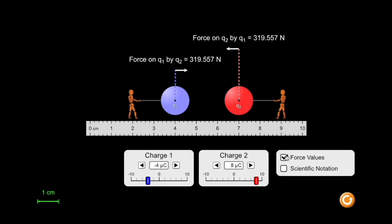Select and deselect the force values option to either show or hide the magnitude of the electric force between the two objects.